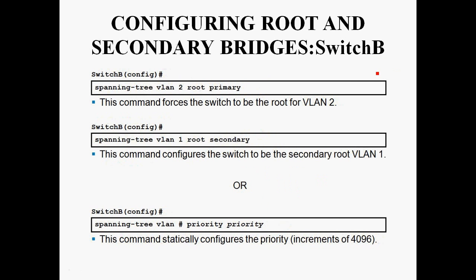In Switch B, VLAN 2 can be assigned as root bridge. The syntax is 'spanning-tree vlan 2 root primary', so in Switch B, VLAN 2 is assigned as root bridge and VLAN 1 is assigned as non-root bridge. The priority value can also be set, incrementing in steps of 4096.